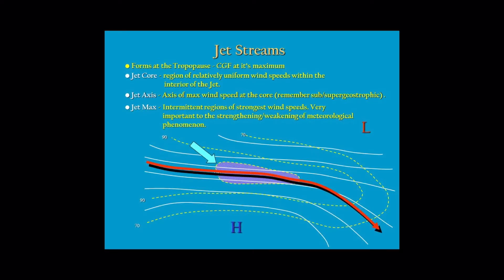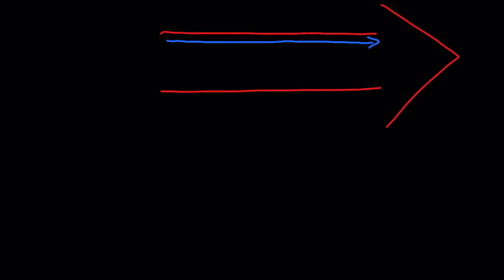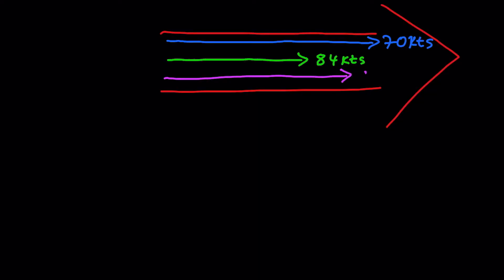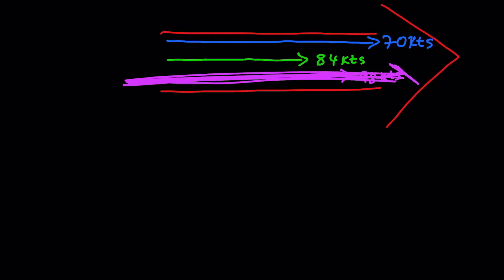The first term is the axis of a jet stream. A jet stream covers a large area both horizontally and vertically, so the winds blowing inside have different velocities — for example, 70 knots, 84 knots, or 98 knots at different lines. The line of wind with the highest wind speed inside a jet stream is called the axis of that jet stream.